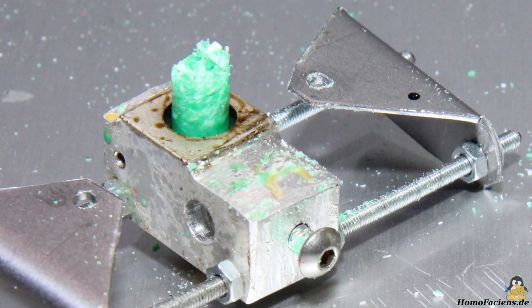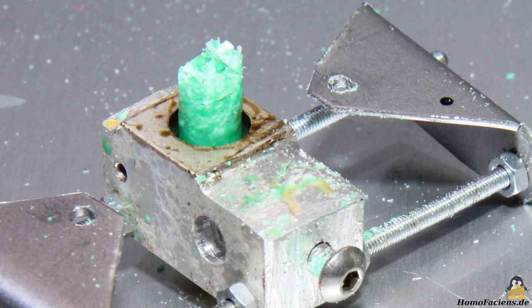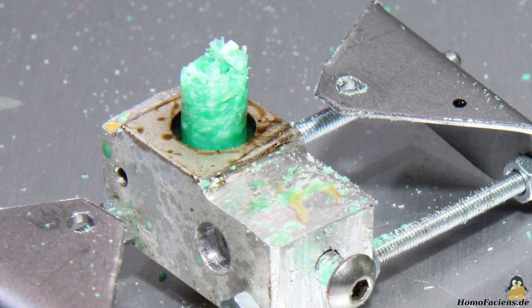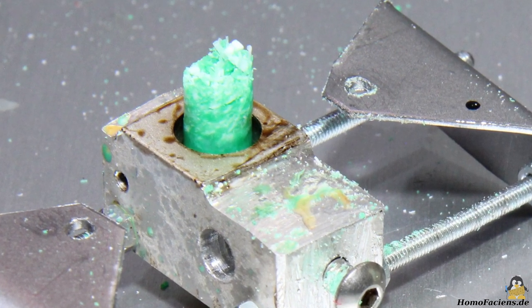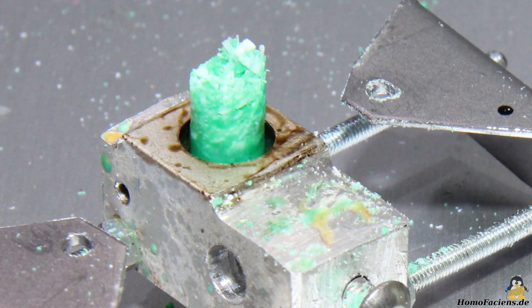In the well functioning extruder, the transition area can be clearly identified and, as desired, is located within the glass block. Above, the sample breaks down into grains, below everything is a compact negative of the Teflon tube in the hotend.